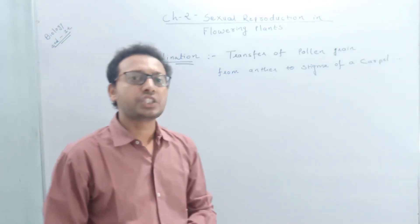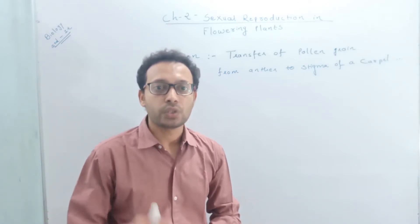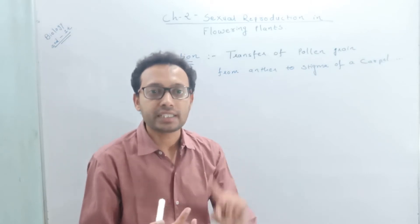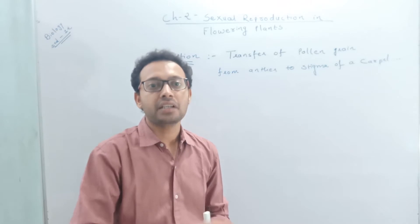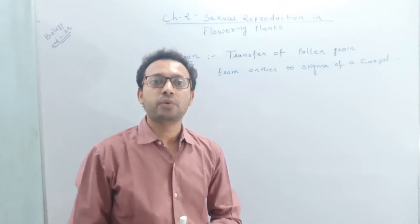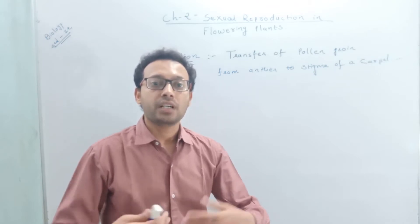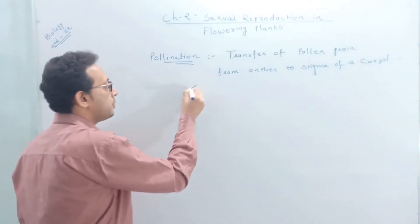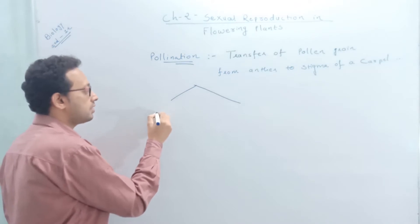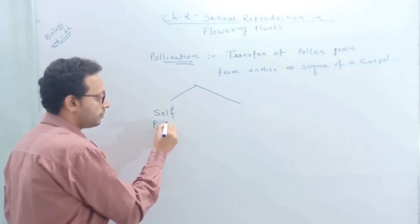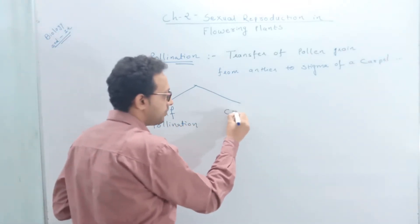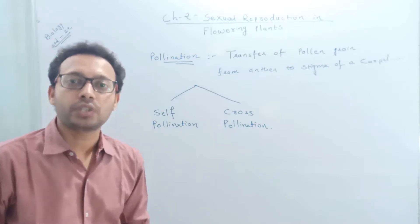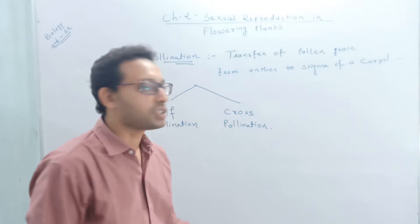Since both male and female gametes are stationary, pollination needs a pollinating agent — such as wind, water, insects, or animals. Before discussing pollinating agents, we should learn the different types of pollination. The pollination process can be divided into two parts: first is self-pollination, and second is cross-pollination.